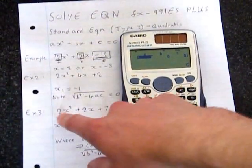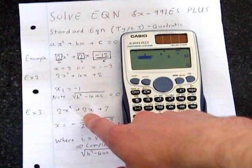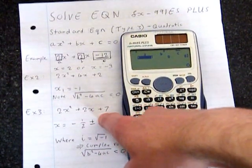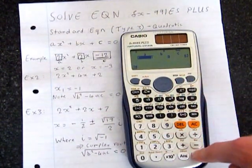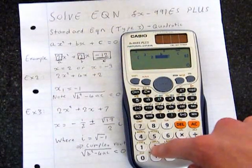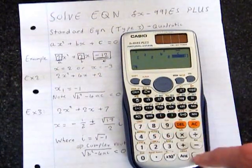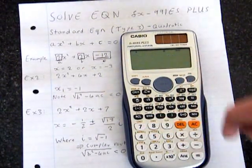So we'll go back to 3 and do the last example, 2x squared plus 2x plus 7. So we'll put this in here, 2 equals, 2 equals, 7 equals, equals again.